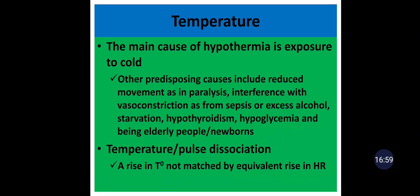Temperature-pulse dissociation, or relative bradycardia, is a rising temperature not matched by an equivalent rise in heart rate. Normally, every 1°C rise in temperature is associated with approximately 10 bpm increase in heart rate. If this does not occur, it is called temperature-pulse dissociation or relative bradycardia, which is found in typhoid fever, brucellosis, and so on.